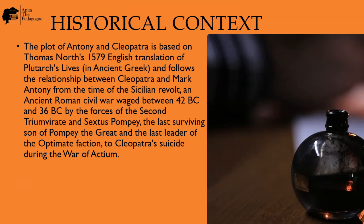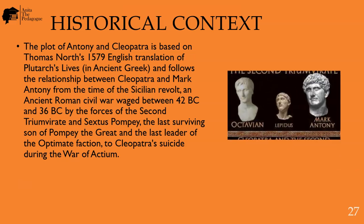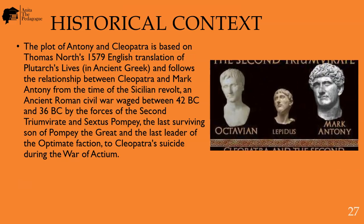The play follows the relationship between Cleopatra and Mark Antony from the time of the Sicilian revolt and the Roman civil war, waged between 42 BC and 36 BC, by the forces of the Second Triumvirate and Sextus Pompey — the last surviving son of Pompey the Great and the last leader of the Optimate faction.